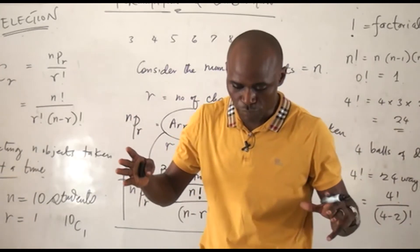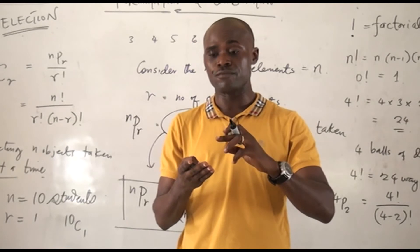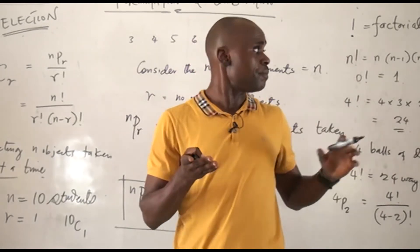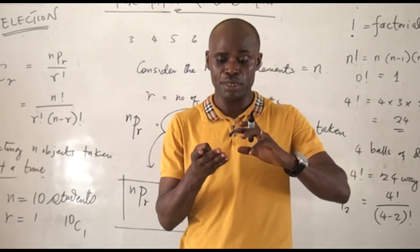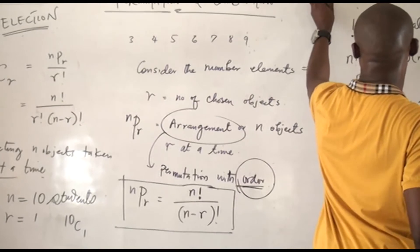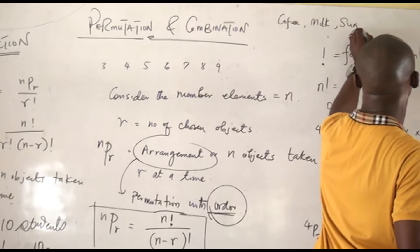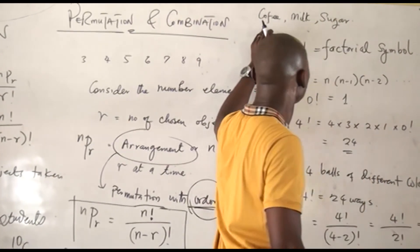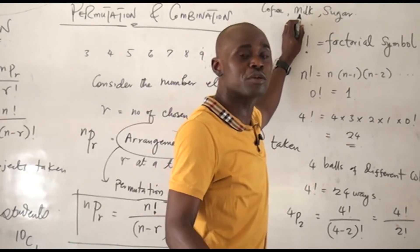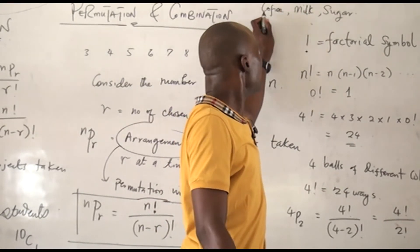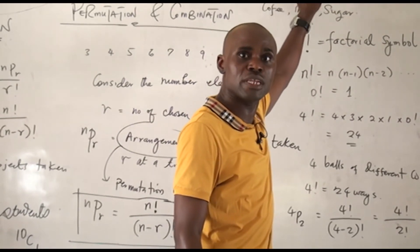It's just like having a cup of coffee. You have the coffee itself, the sugar, and the milk. In permutation, the arrangement matters — it is strict. It can be coffee, milk, sugar, and if you switch this in permutation it gives a different answer. But in combination, sugar can come first, coffee can come second — you can switch the order and you get the same answer. So order is not considered in combination.